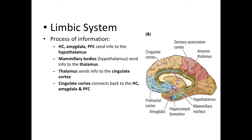There is a specific flow of information within the limbic system. First, the hippocampus, the amygdala, and the prefrontal cortex send information to the hypothalamus. Then the mammillary bodies, which are in the hypothalamus, send their information through the thalamus towards the cingulate cortex. The cingulate cortex then connects back to the hippocampus, the amygdala, and the prefrontal cortex. This is the flow of information within the limbic system.